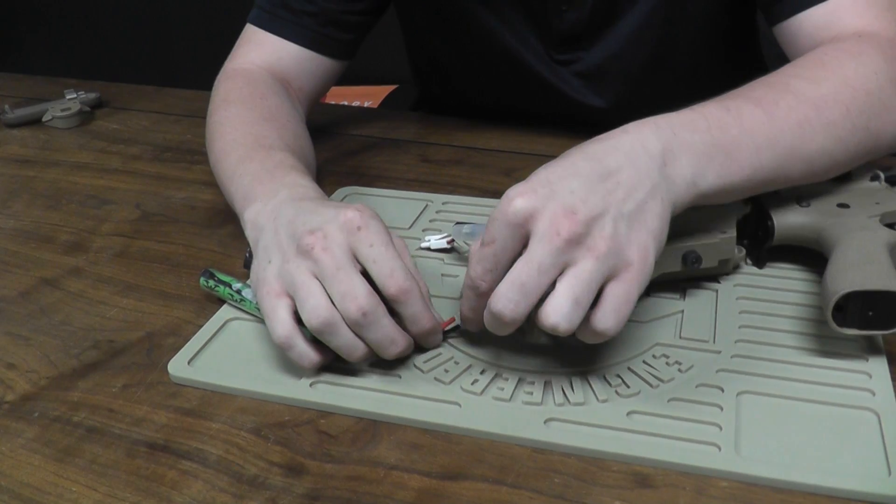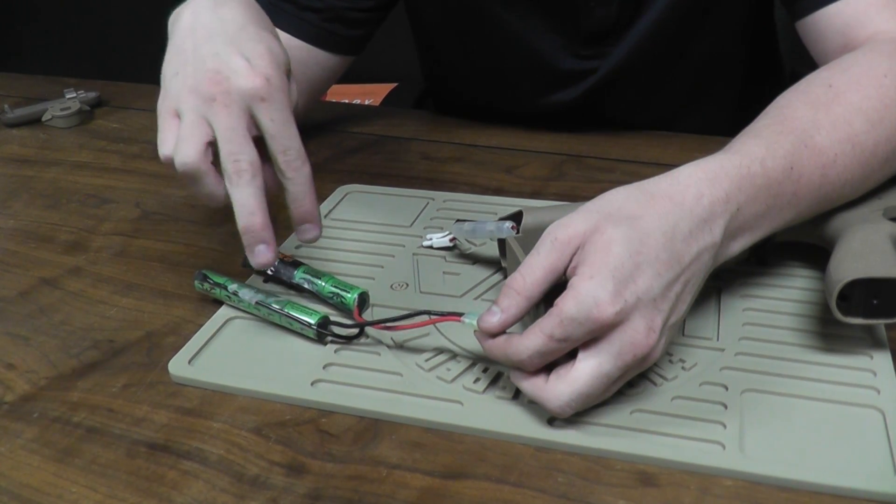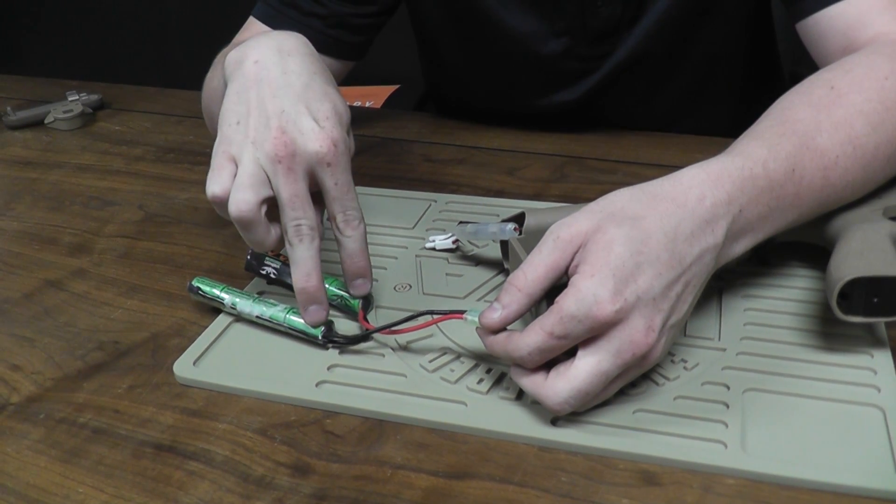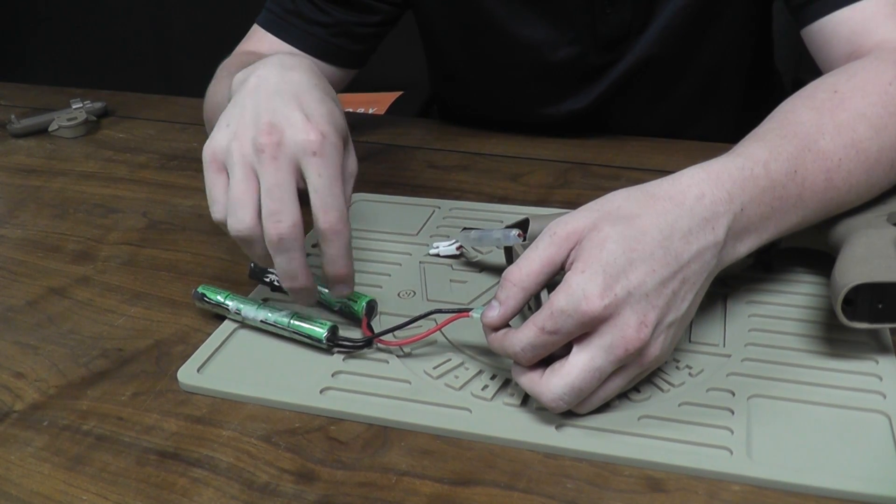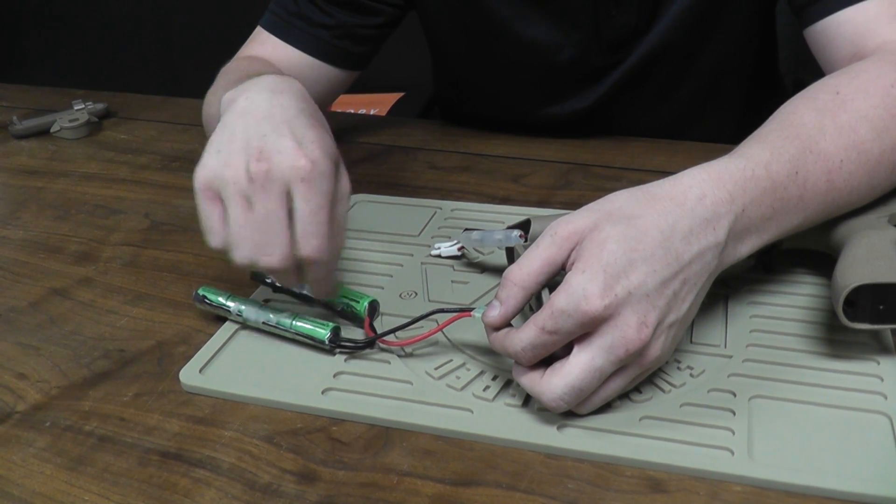So going from this end, there's always going to be two metal contacts here. You always want to make sure if you're having issues with the battery, and you know it's the battery, not the gun, that you look here, make sure there's nothing funny going on here.